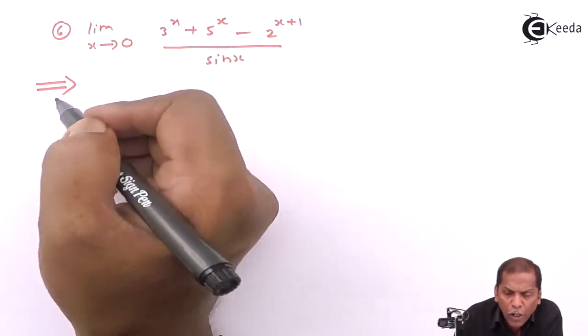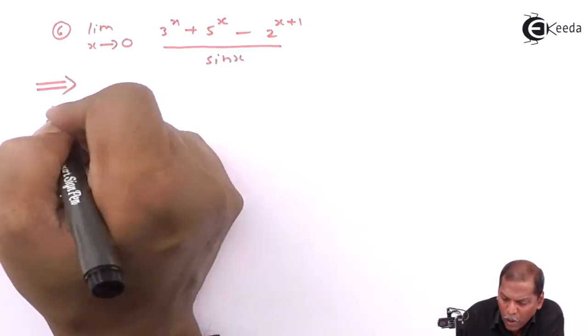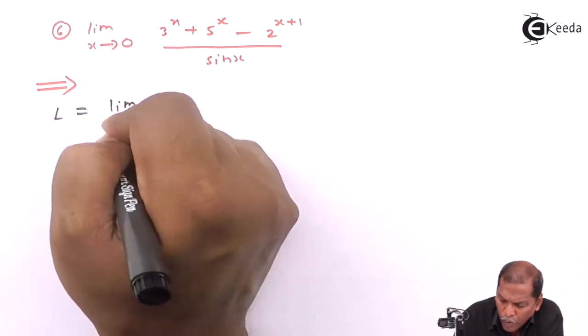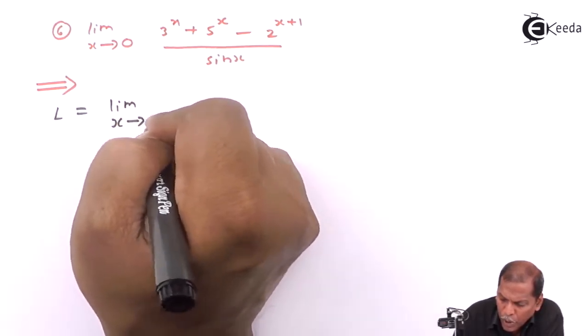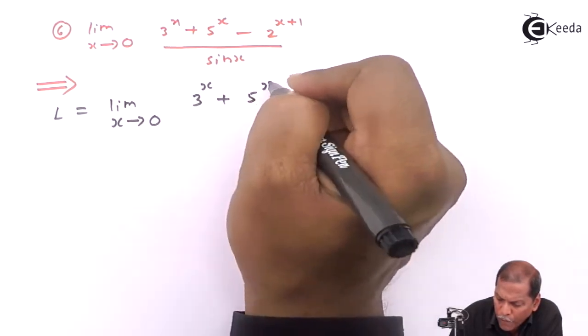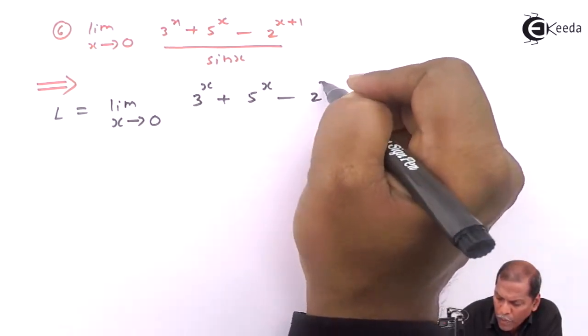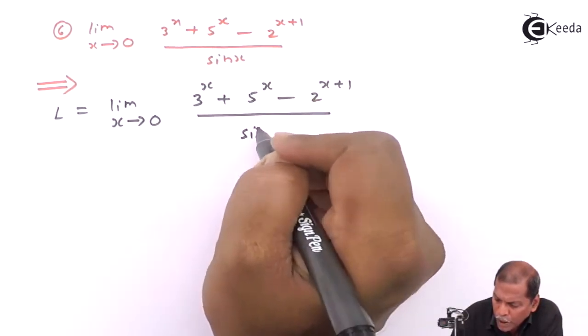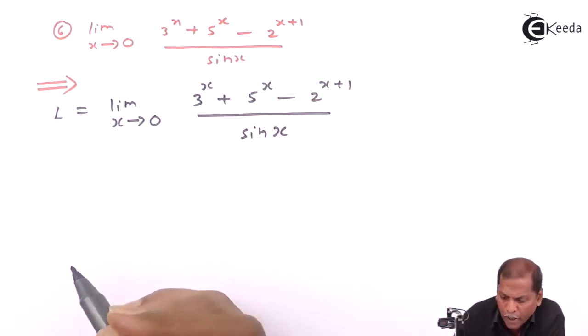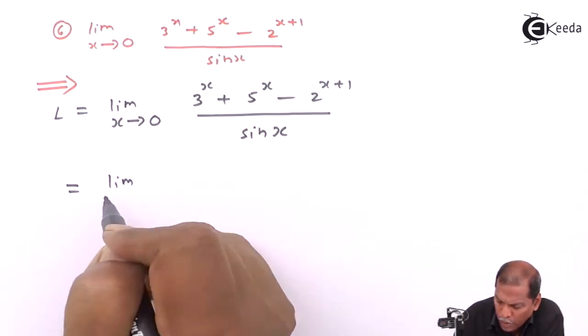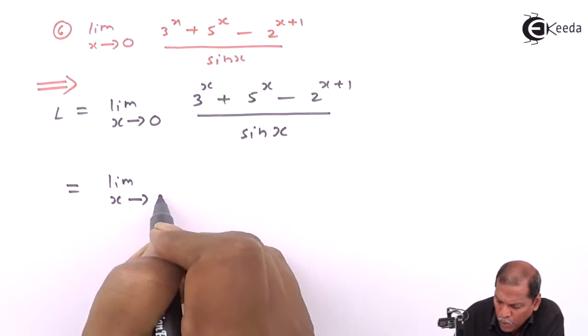First of all we denote given problem as L. So L is equal to limit x tends to 0, 3 raise x plus 5 raise x minus 2 raise x plus 1 whole thing divided by sin x. So it is equal to limit x tends to 0.